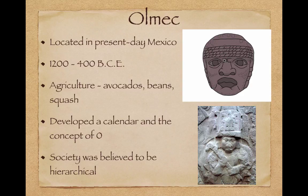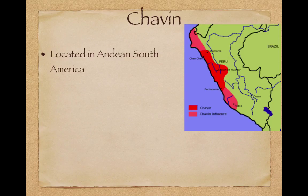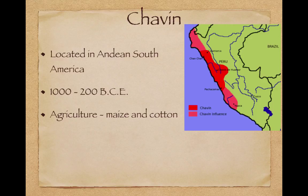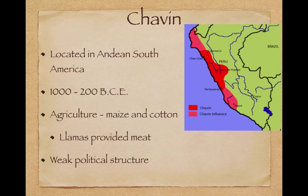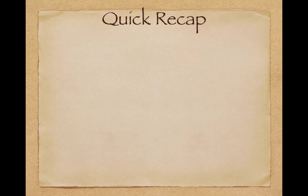The Chavin is located in Andean South America along the Andean mountains on the western portion of South America, from 1000 to 200 BCE. Their agriculture focused on maize and cotton to make clothing. Llamas provided meat. Although they lasted around 800 years, they had a very weak political structure.